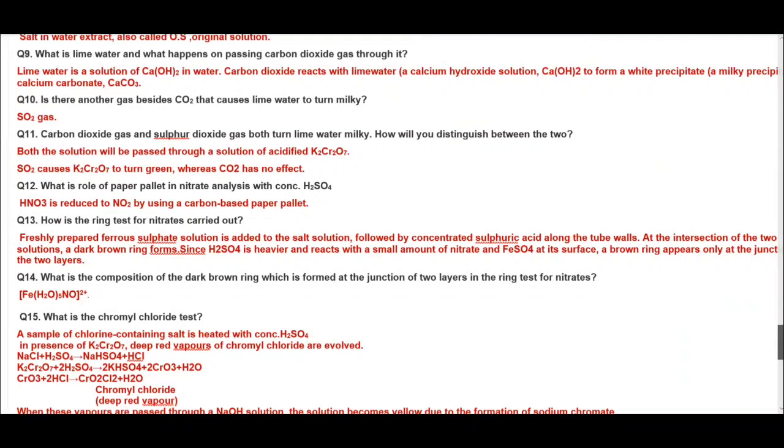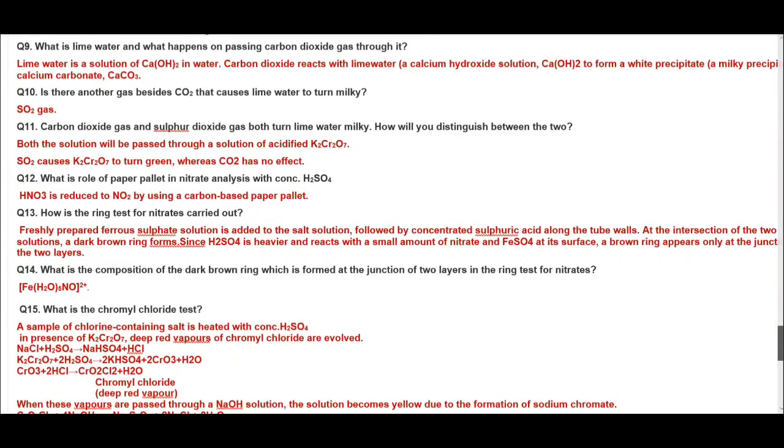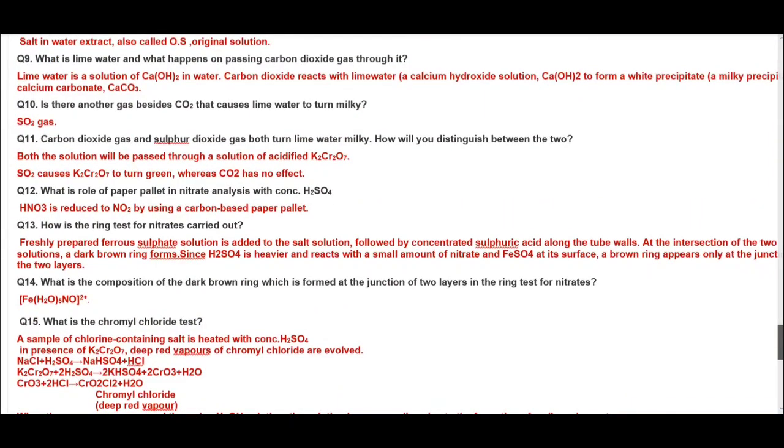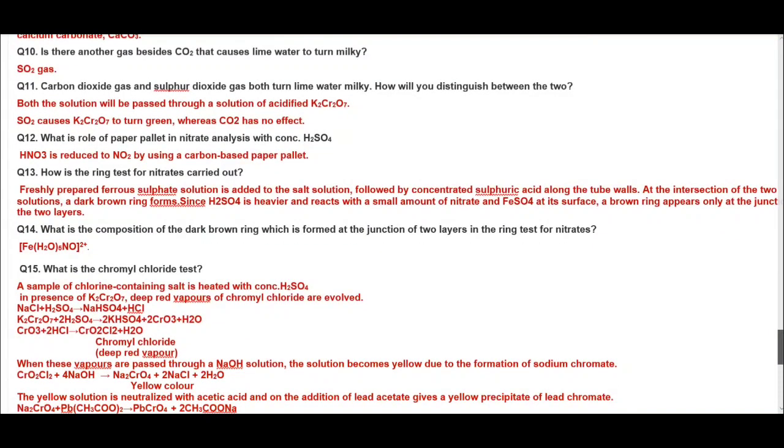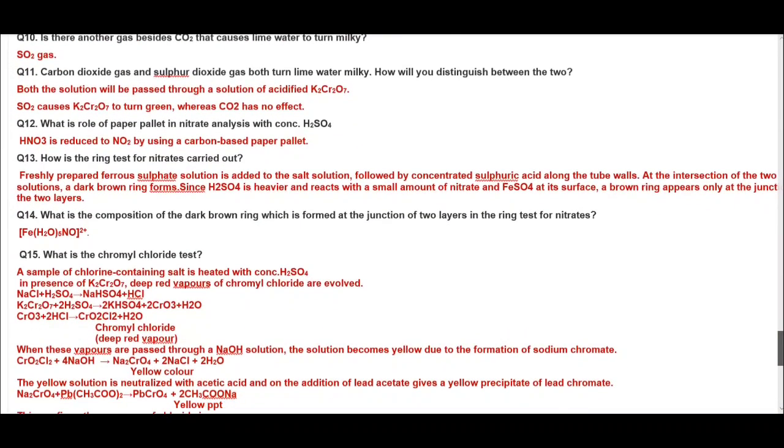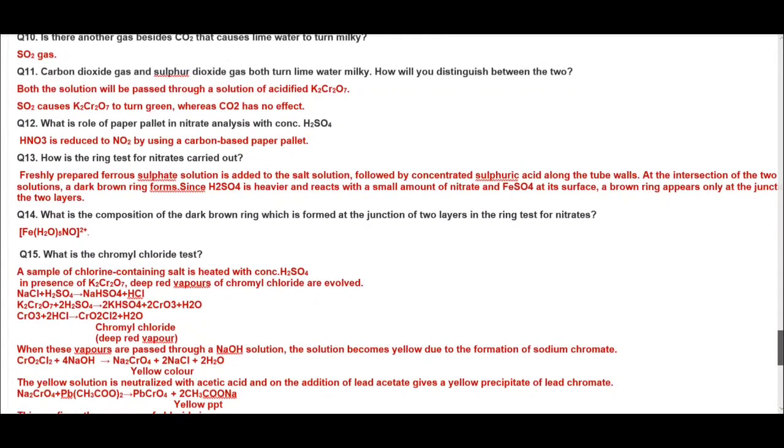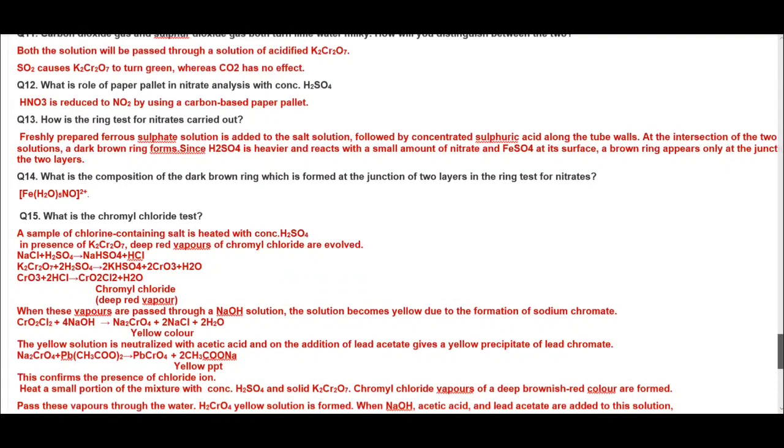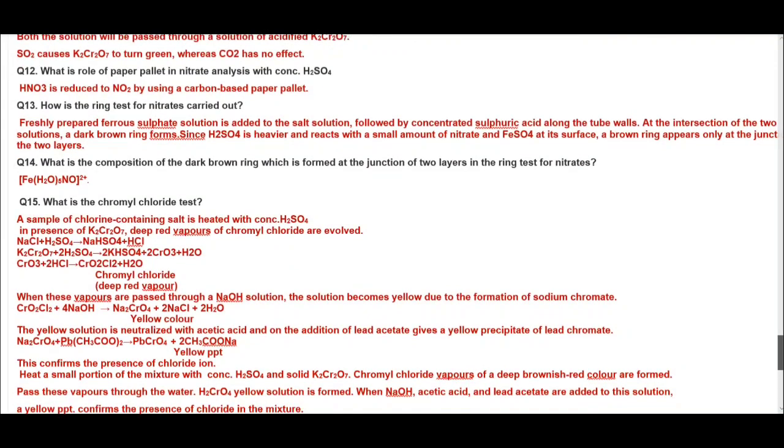What is lime water? What happens on passing carbon dioxide gas to it? Lime water is calcium hydroxide. It turns, carbon dioxide turns lime water milky due to formation of calcium carbonate. And on passage of excess milkiness disappears. Is there another gas besides carbon dioxide that causes lime water to turn milky? Sulfur dioxide gas shows similar reactions as carbon dioxide with lime water. Carbon dioxide gas and sulfur dioxide both turn lime water milky. How will you distinguish between the two? Both will be passed through a solution of acidified dichromate. Sulfur dioxide causes dichromate to turn green whereas carbon dioxide has no effect.